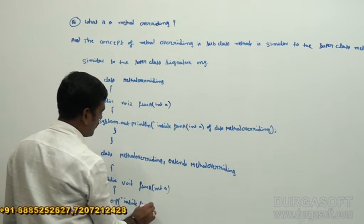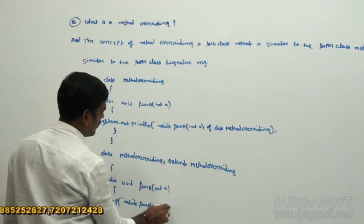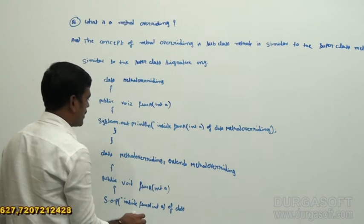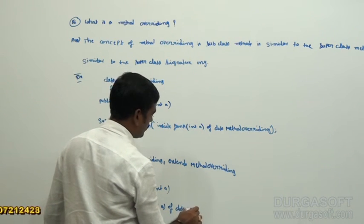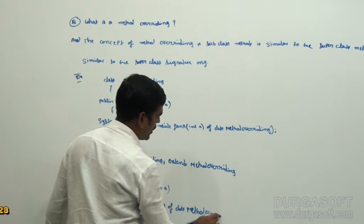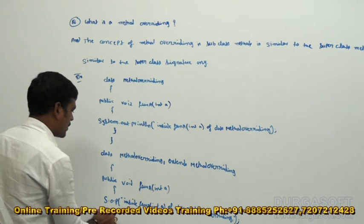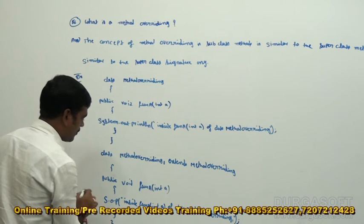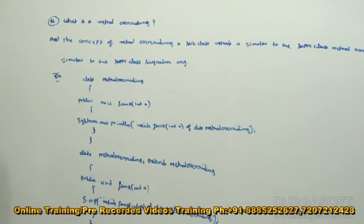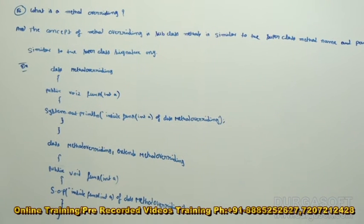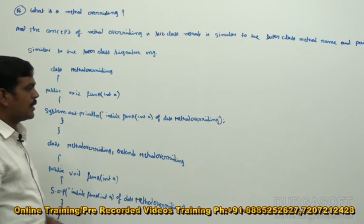Function A of class — method overriding. Then close the function A, and the next, close the class. Now we can take in a client application, create an object, method overriding one. And we can call the business methods, function A.